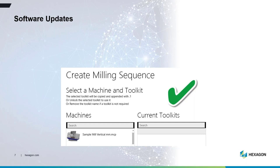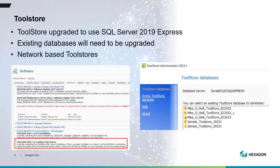From a technical standpoint, Tool Store has also been updated. SQL Server Express has moved to the 2019 version. On a standalone system this will update automatically — you'll see a red exclamation mark if it hasn't. However, if you're on a network, it's very important that the server software is also upgraded. Download the server software from the download page and install it on your nominated network server PC, so EdgeCAM can communicate correctly with the 2023 software.